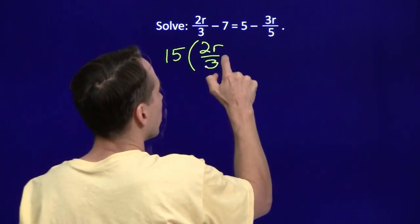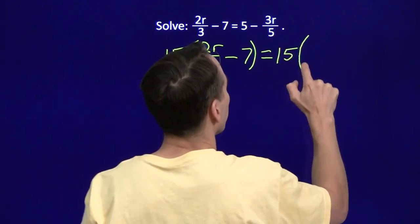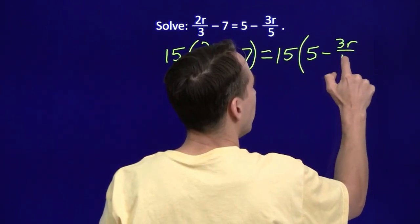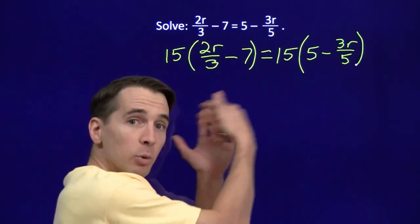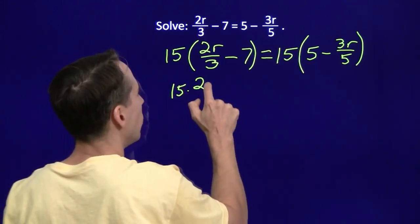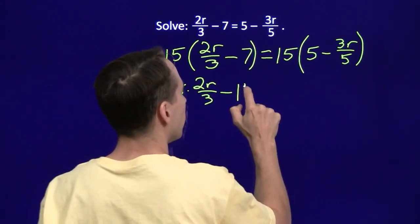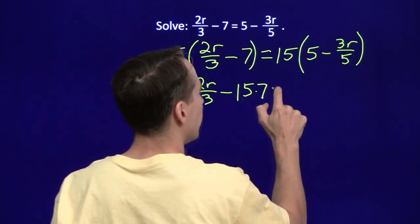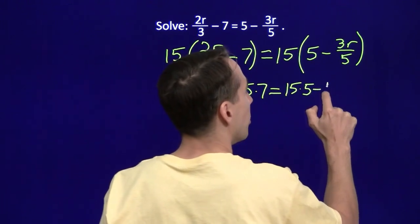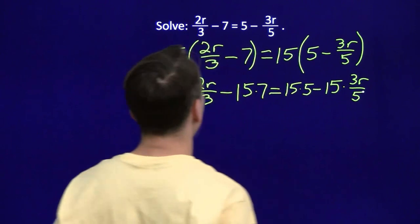Now, our goal here, initially, is just get rid of the fractions. Once again, we can't play favorites. We have to multiply both sides of the equation by the same thing. And now we use the distributive property. We distribute this out. We have 15 times 2r over 3. We have to multiply the 7 by the 15 as well. 15 times 7. Now, over here on the right, we get 15 times 5 minus 15 times 3r over 5.